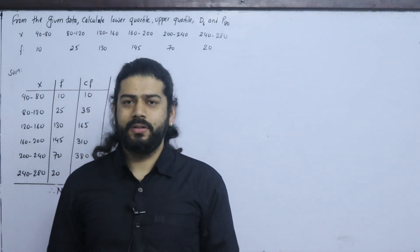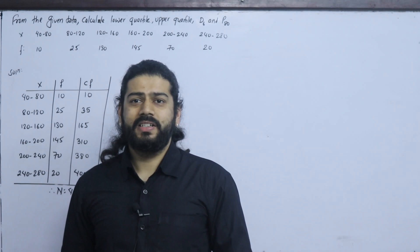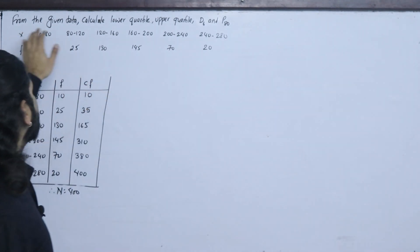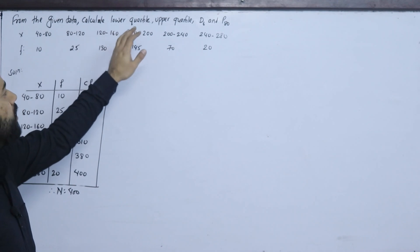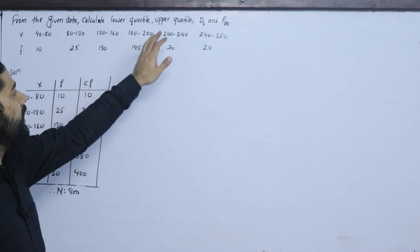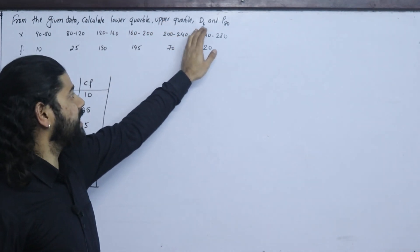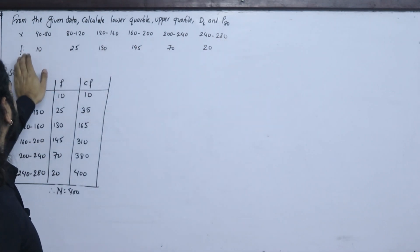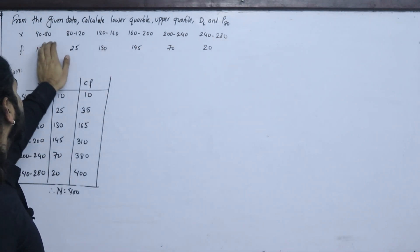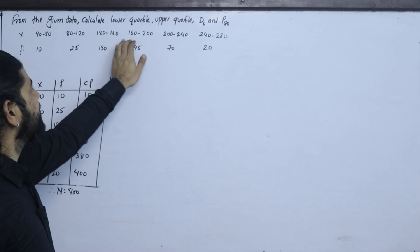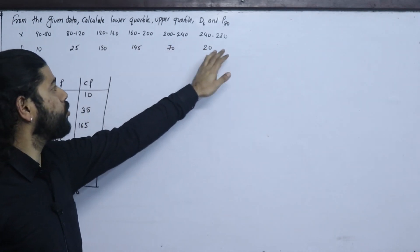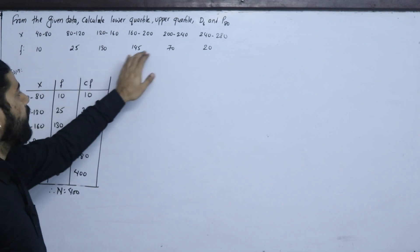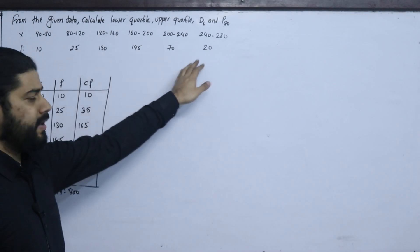Now the question is: from the given data, calculate the lower quartile Q1, upper quartile Q3, the sixth decile D6, and the 80th percentile P80. The data has class intervals: 40–80, 80–120, 120–160, 160–200, 200–240, 240–280, with corresponding frequencies: 10, 25, 130, 145, 70, 20. Total N = 400.